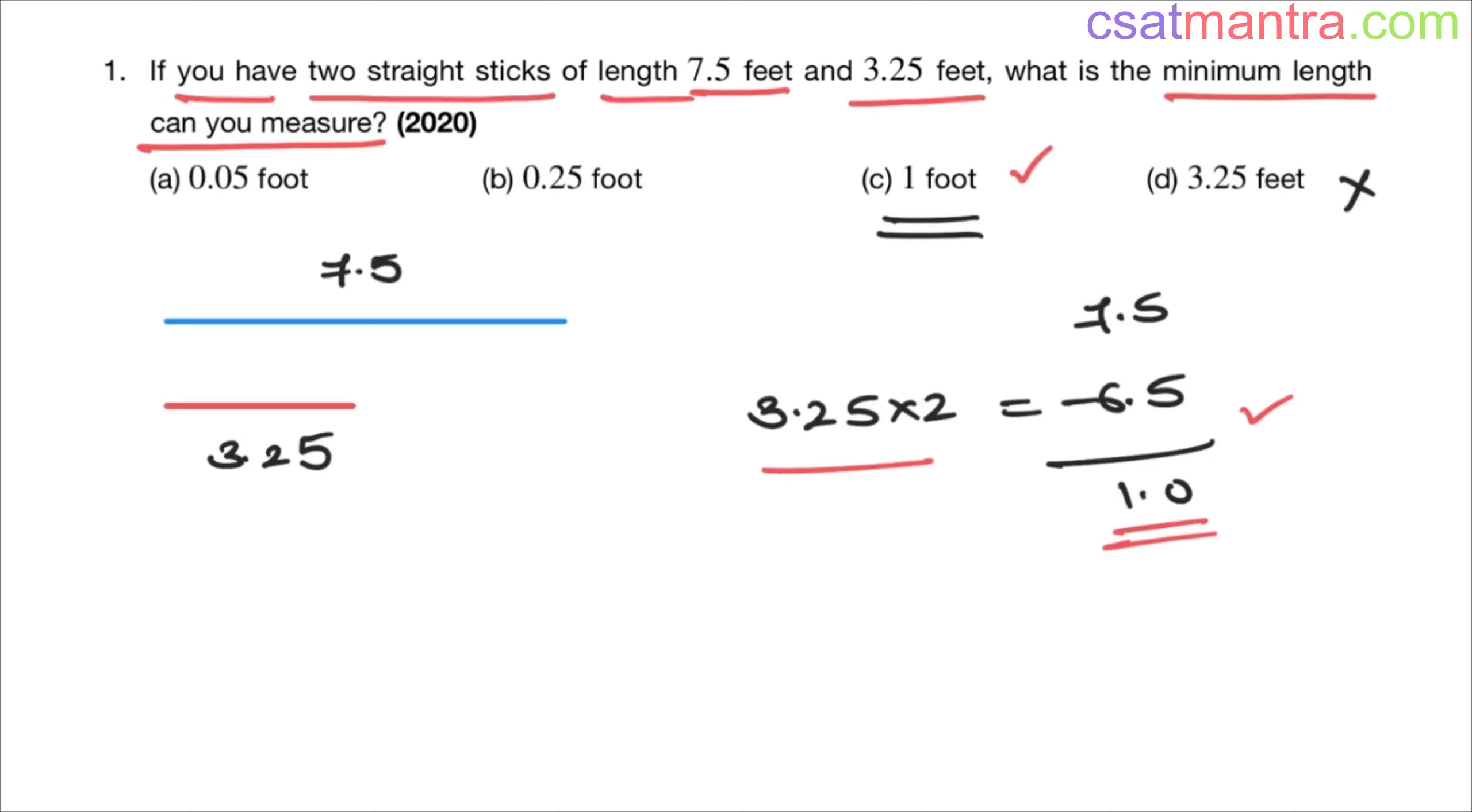Now from here I will show you this problem can be solved in two ways. You doubled the length of 3.25, right? So what is remaining? One foot. So you marked this one foot on 7.5 feet stick length. Now using this one foot length, you are marking at three places on this 3.25 feet stick.